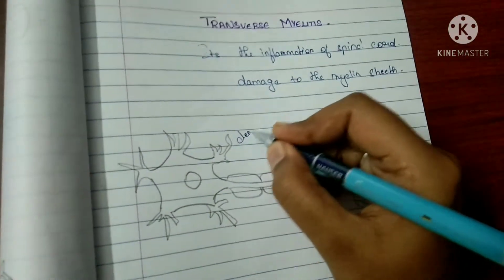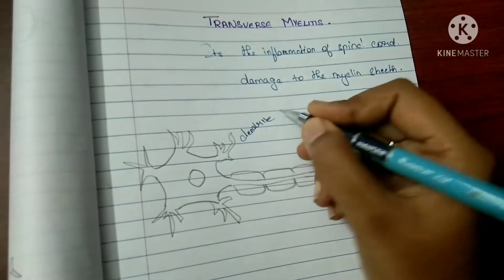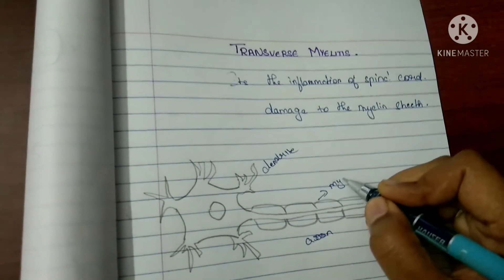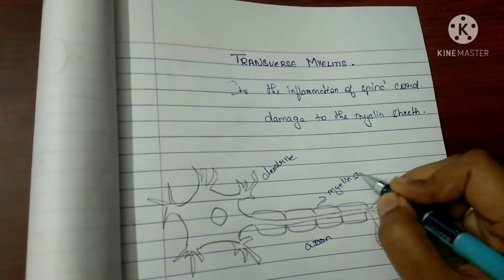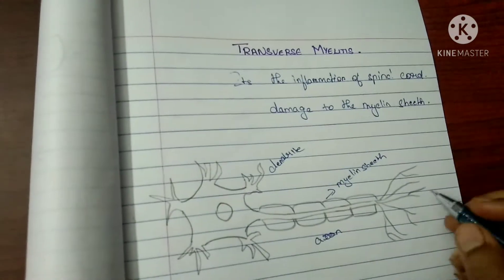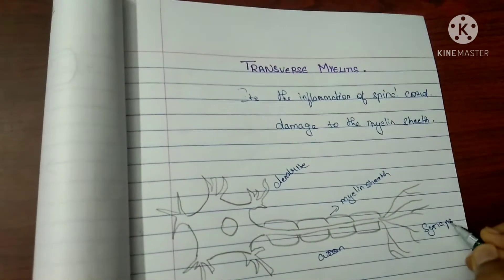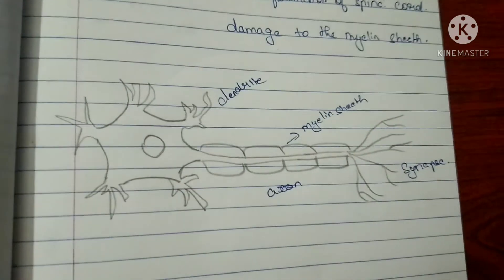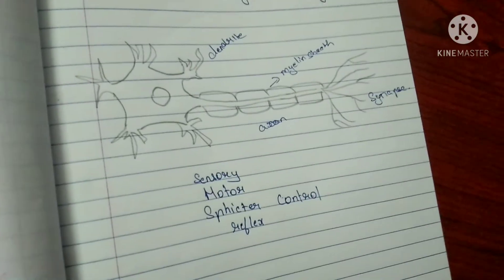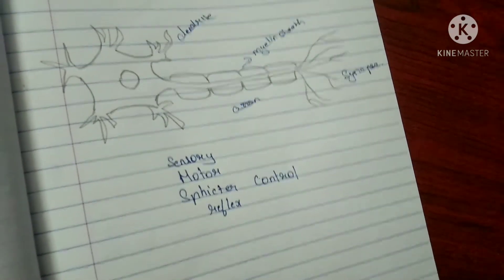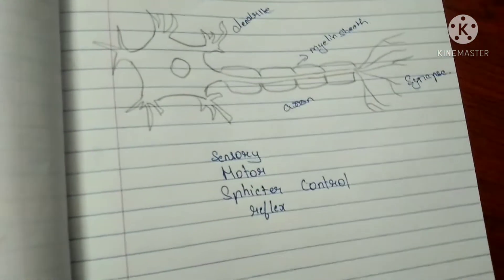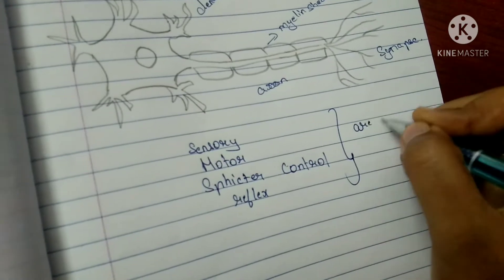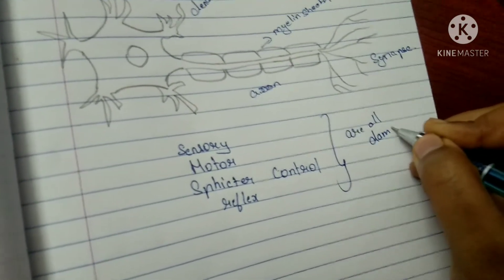This is a neuron. This is the dendrite, which receives the signal, and the axon sends the signal. The axon is covered by the myelin sheath, and through the synapse, each neuron communicates with each other. When the myelin sheath is damaged, the impulses through the axon are disrupted. Since the spinal cord is damaged, all the messages from the nerves are disrupted. All the sensory, motor, and even sphincter control, and sometimes even the reflexes, are all damaged.